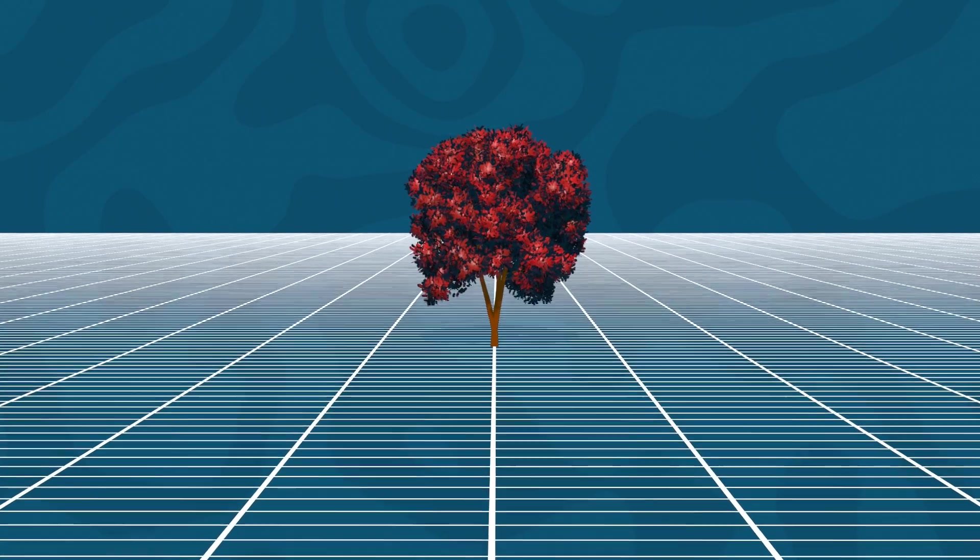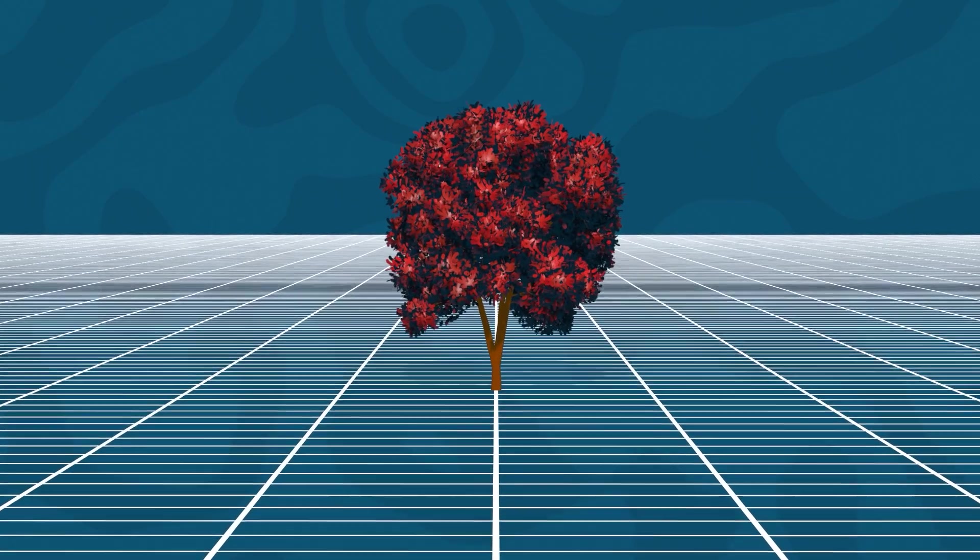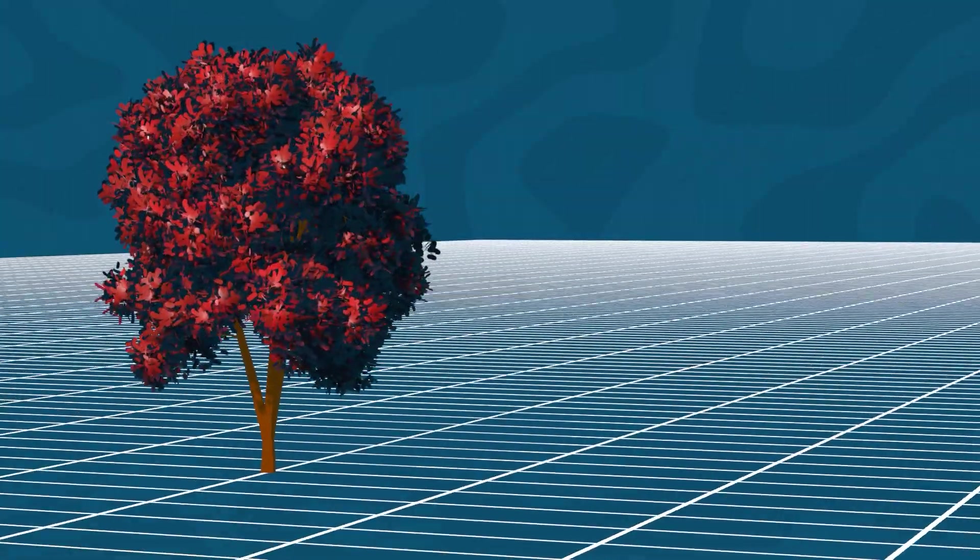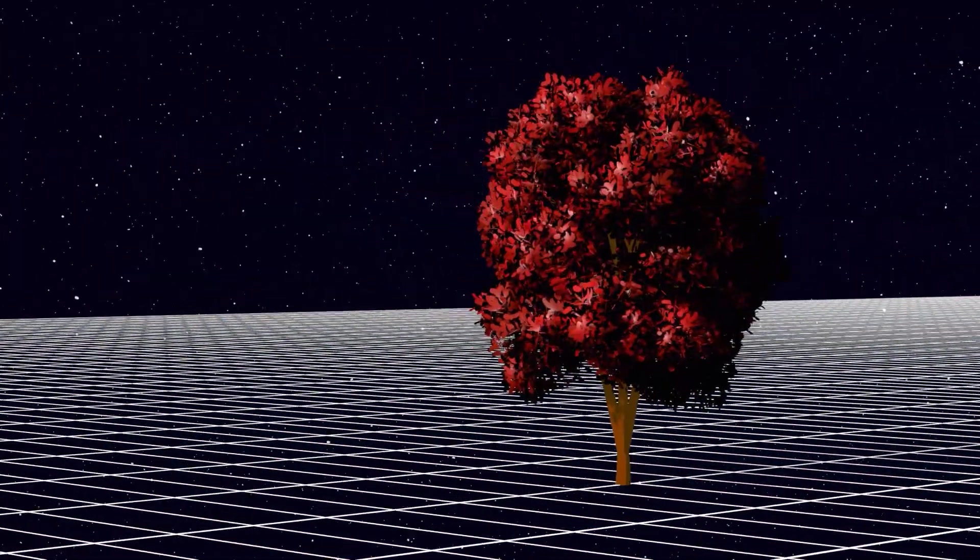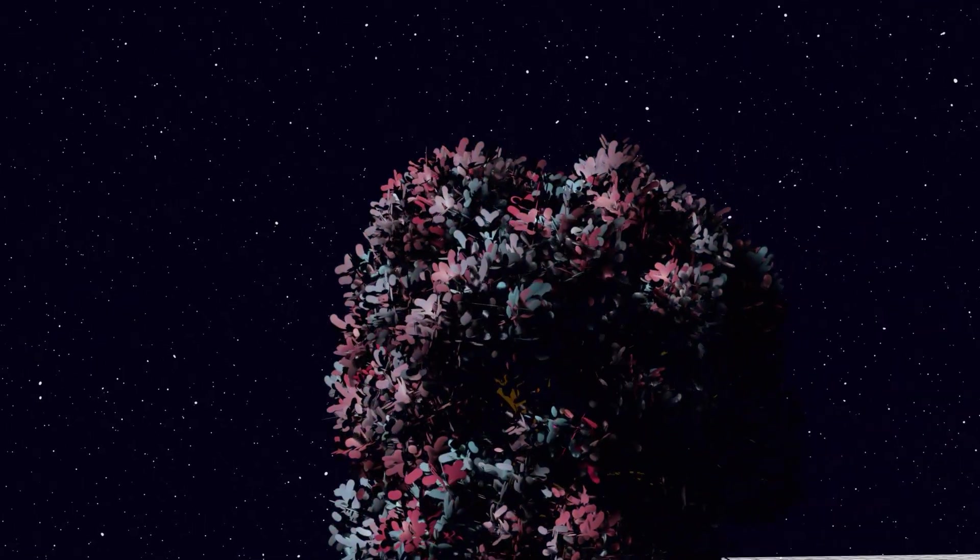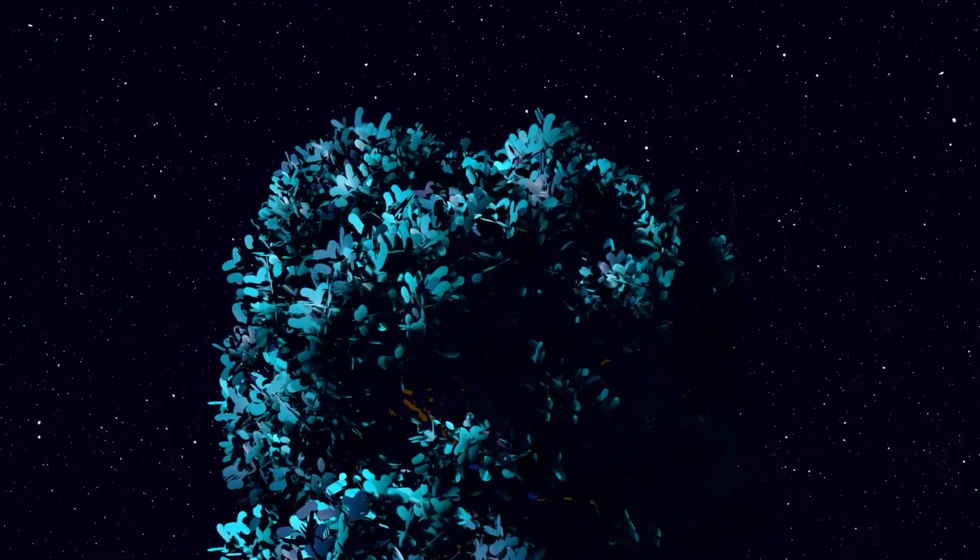Returning to our first example, when we talk about knowing all there is to know about a tree, what we really mean is knowing its relationship with the universe around it. What we see as the color of its leaves is really just seeing the interaction between the leaves and light.